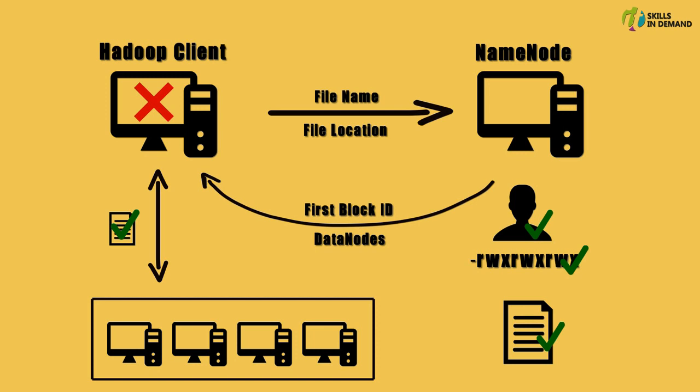During the read process, if the data node fails or the process dies for some reason, then the client automatically tries to read the data from the next data node that holds a copy of the requested data. If the copy of the requested data is unavailable on all the data nodes, then the read process fails. This is how the data is read from HDFS.